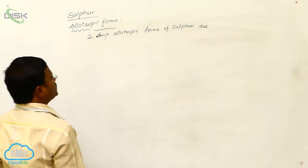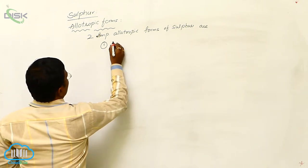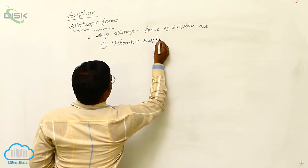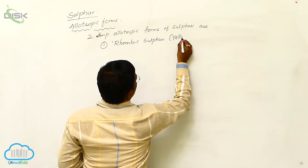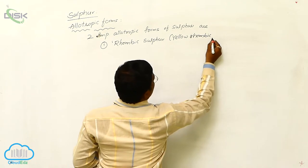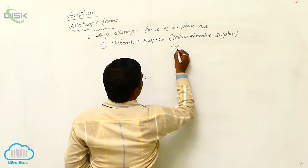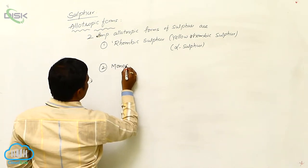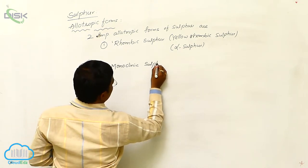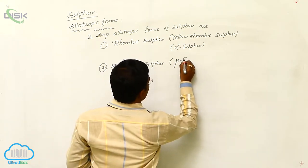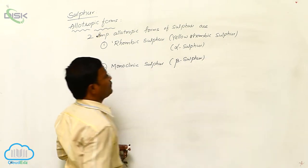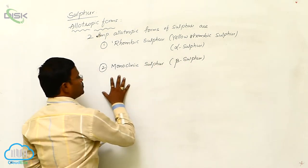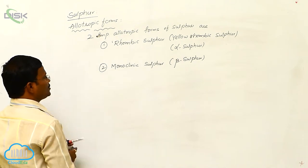The two important allotropic forms of sulfur are: number one, rhombic sulfur — also called yellow rhombic sulfur or alpha sulfur — and number two, monoclinic sulfur — also called beta sulfur.